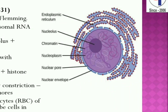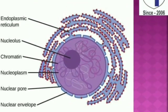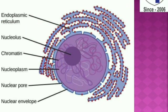The nuclear membrane consists of two membranes — outer and inner. The outer membrane communicates with the endoplasmic reticulum at several points, while the inner membrane is associated with the inner surface of the nucleoplasm.